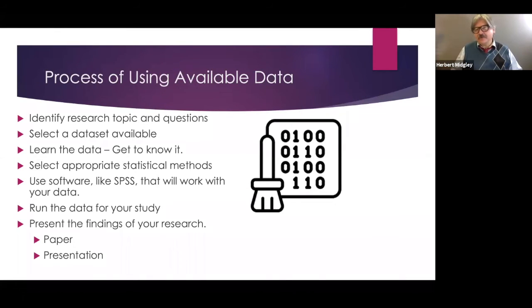Let's talk about the process of using available data. That's basically the process anytime you're trying to do any kind of research. One is identify your research topic and come up with your question or questions. Select the data set that's available for you. Get to know the data. Get to learn this data. I'm going to talk about that more on the next slide. It's very important. Find the right statistical methods. Then eventually use software like SPSS that will work with your data. Run your data for your survey. And hopefully you're going to present your research either in paper or presentation or maybe make a video as well.